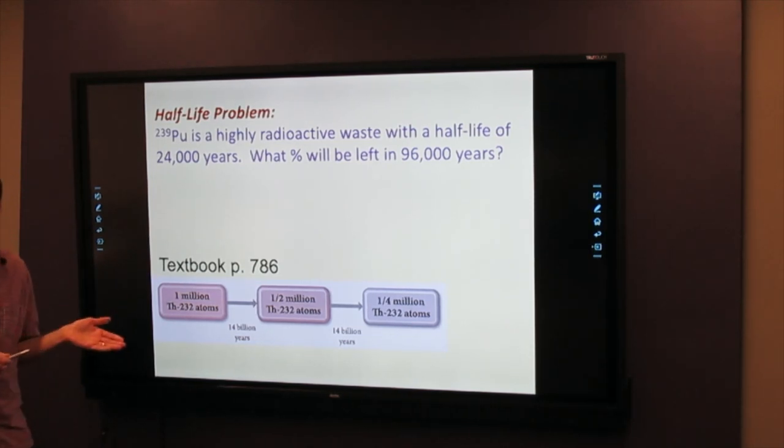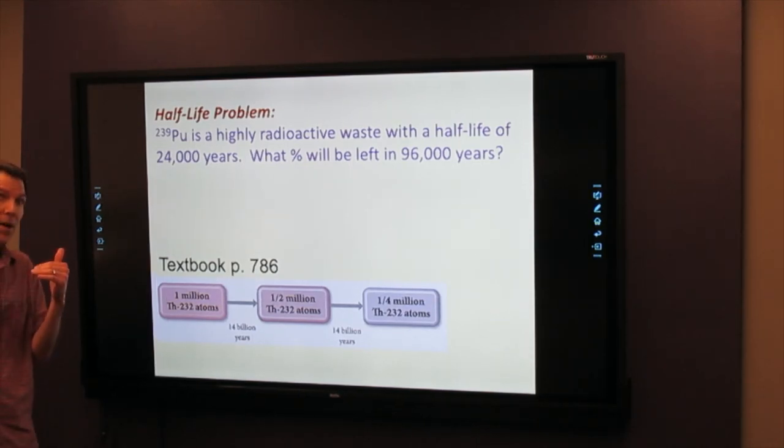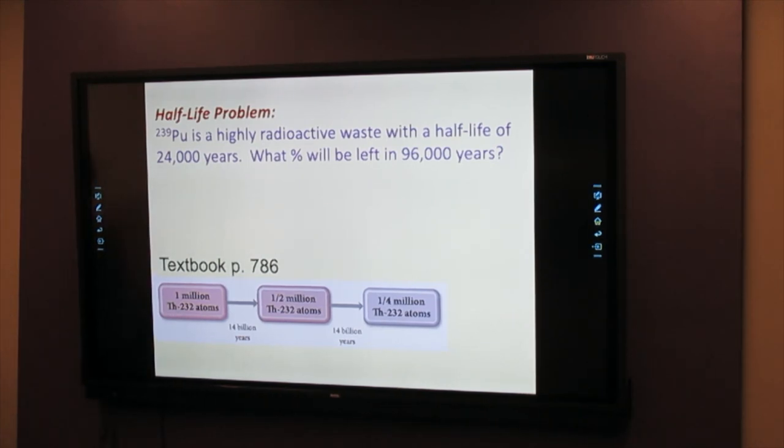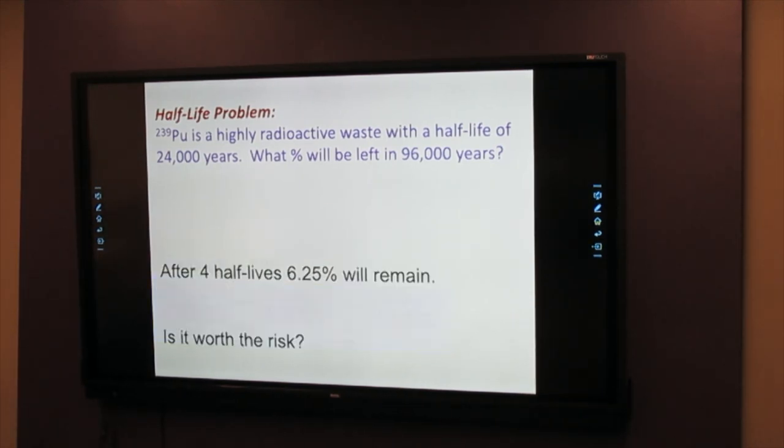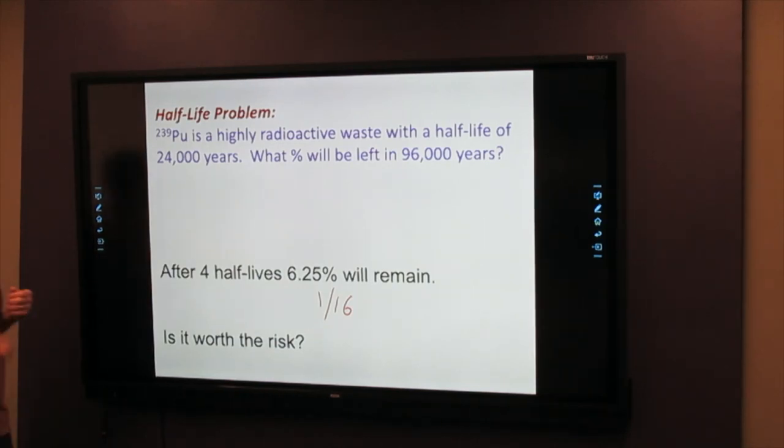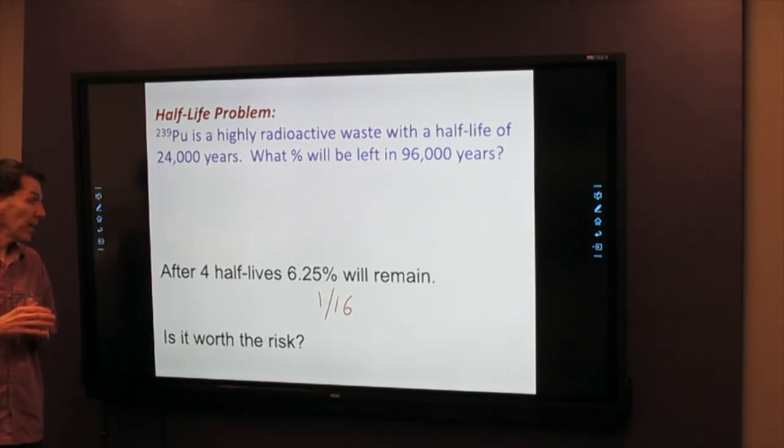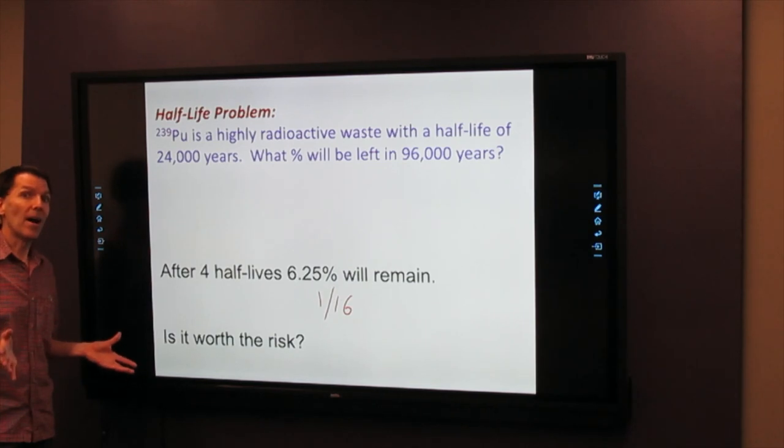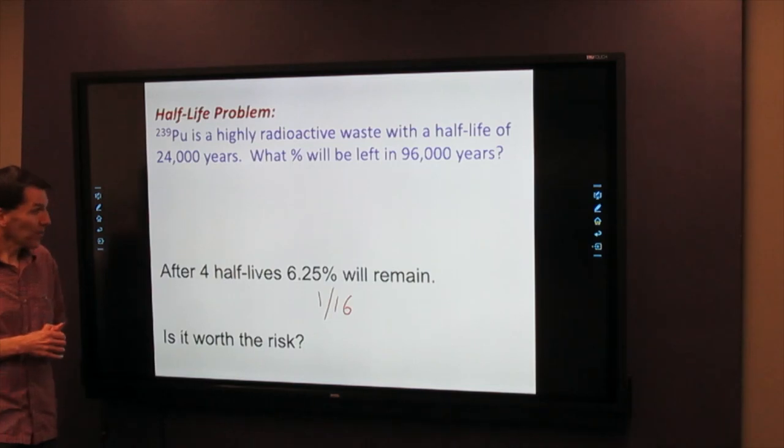So as a percentage, we keep cutting it in half. We go 100 to 50. Second half-life, 25 of the original. Third half-life, 12.5. Then finally, 6.25% will be left. As a fraction, it's 1/16. We do not have a long-term plan to deal with this waste that is sitting at the plants, so this is a question for us for the future. Do we decide to close all of our nuclear power plants that we have operating now, or do we build more? These are questions that society has to face.